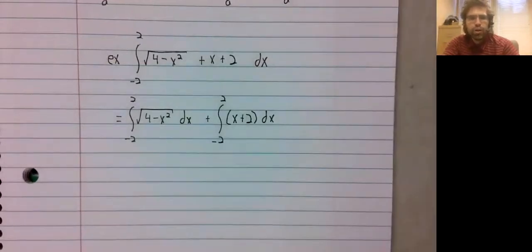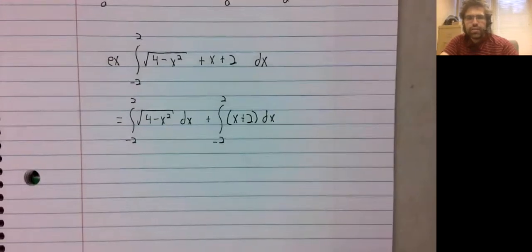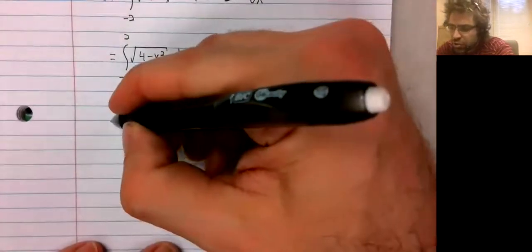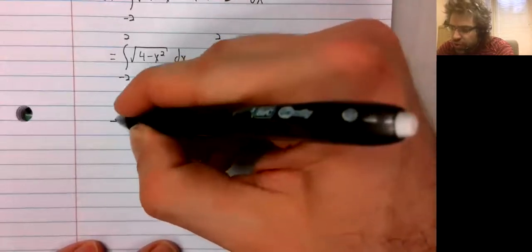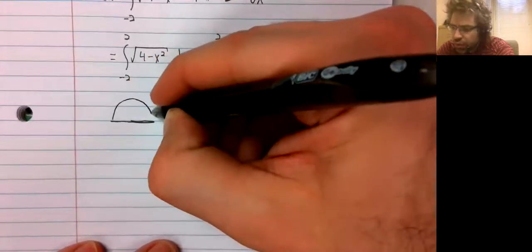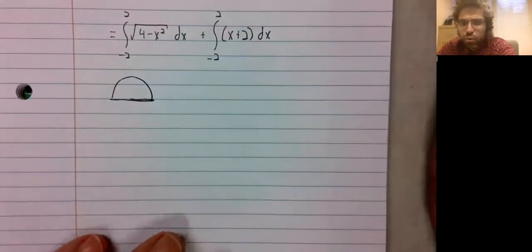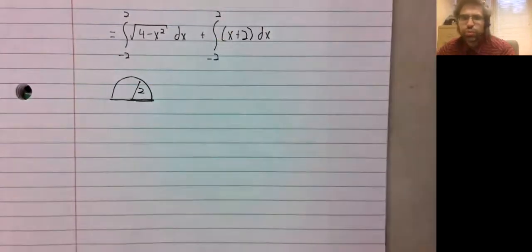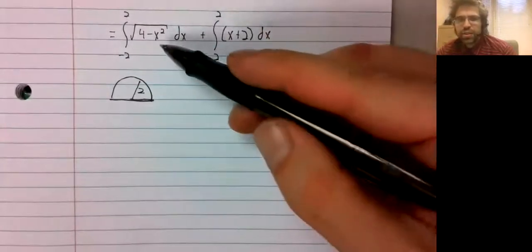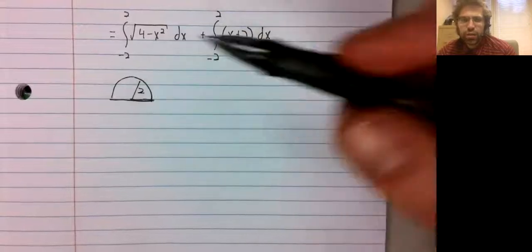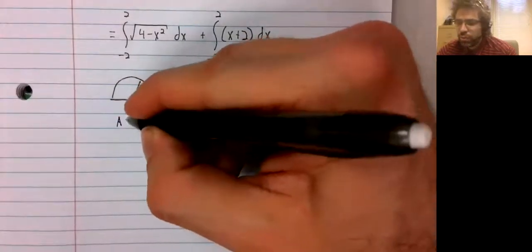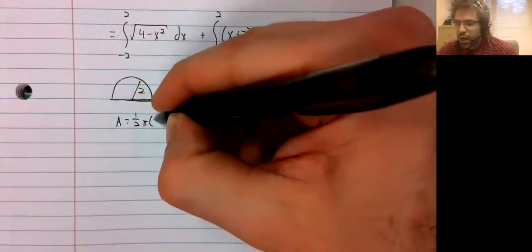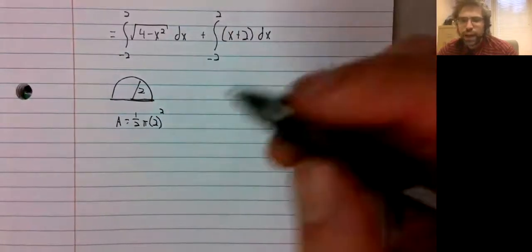And we've already done this integral in a previous set of notes. We saw that the curve here is a semicircle with a radius of 2. And this integral, which is then the area of this semicircle, is one half times pi times 2 squared.